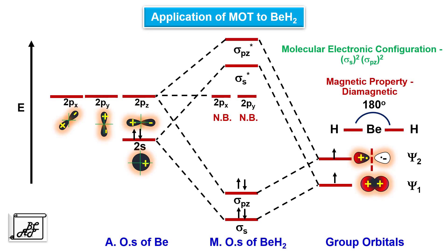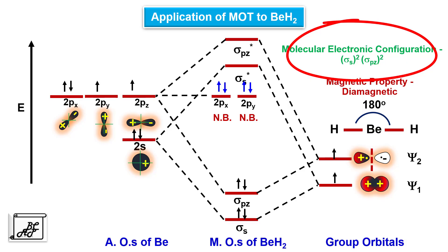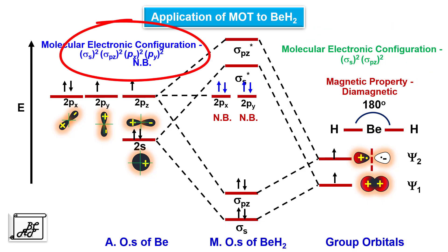If we consider the same diagram for the H₂O molecule treating it as a linear molecule, this would be the resulting diagram. When we fill the electrons, in the case of oxygen there are total four electrons in the 2p orbital. These four electrons will get occupied in the 2px and 2py molecular orbitals, giving this molecular electronic configuration for the linear H₂O molecule. However, experimentally it is found that the water molecule is not linear but rather an angular molecule, and according to valence bond theory H₂O undergoes sp³ hybridization with a bond angle of 104.5 degrees.